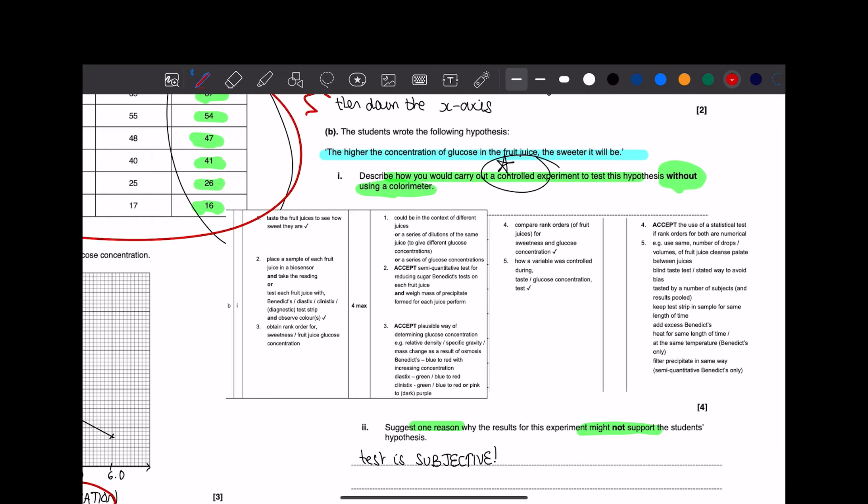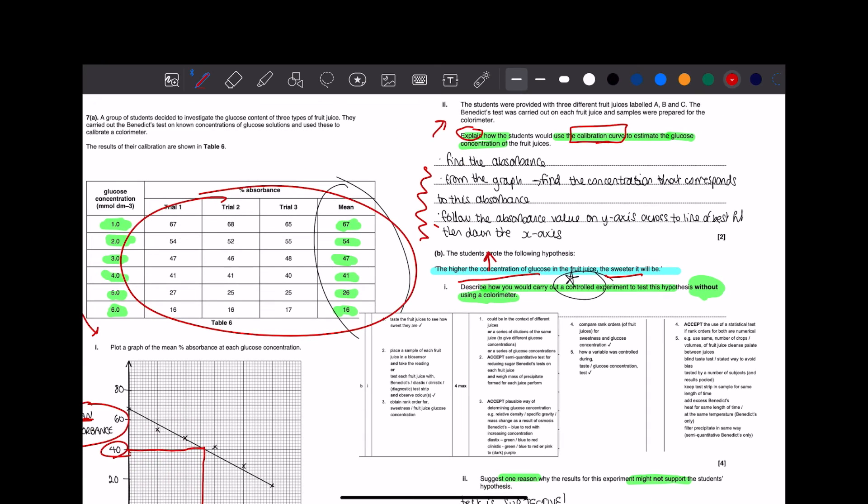This one's crazy. It's a full marker on describe how you would carry out a controlled experiment to test this hypothesis without using a colorometer. What's the hypothesis? It is that the higher the concentration of glucose in the fruit juice, the sweeter it will be. But here's the caveat. It's saying you can't use a colorometer. And we've got three samples of fruit juices: A, B, and C.